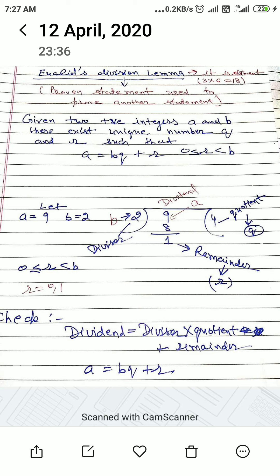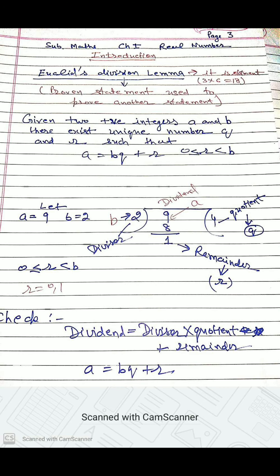Now we check the formula. Dividend equals divisor into quotient plus remainder. Divisor is b, quotient is q, remainder is r, dividend is a. So a equals bq plus r, where r always greater than equal to zero, less than b.